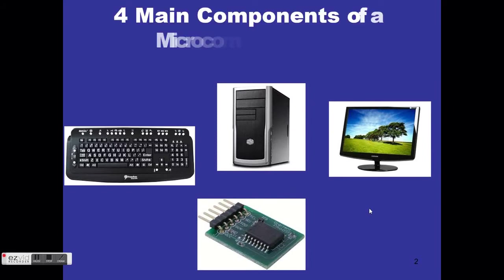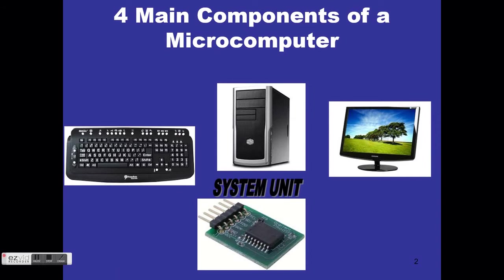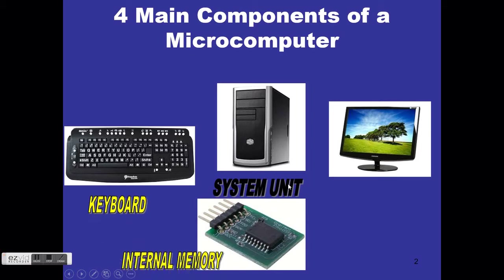This is a basic computer. The four main components of a microcomputer are: the system unit — which is the case housing the CPU and ROM — the keyboard, your internal memory, and a monitor. A computer does not require a mouse to function. With the system unit containing all its components, together with your keyboard, internal memory, and monitor, your computer will function.